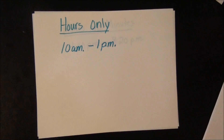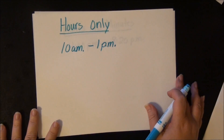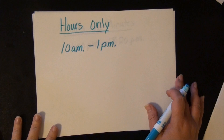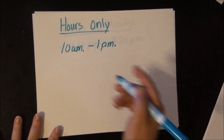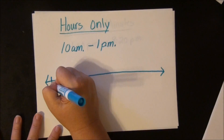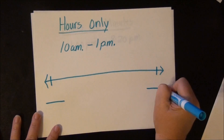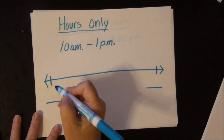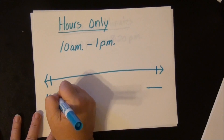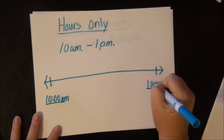So let's look at where you're given the hours only — 10 a.m. to 1 p.m. Let's say the word problem says you're going to meet your friend at McDonald's to play in the play place from 10 a.m. to 1 p.m. What you want to do is draw your open number line with two vertical lines, one at each end. This is your beginning time and this is your ending time. We're going to write 10 o'clock a.m. at the beginning and 1 o'clock p.m. at the end.